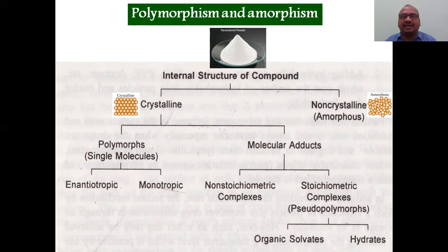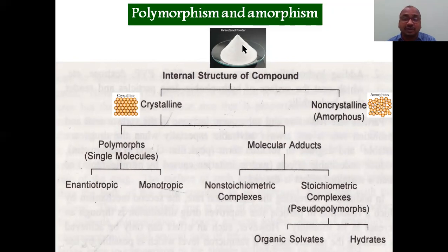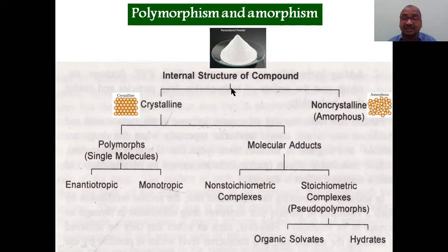First, see the internal structure of the compound, not the external structure. This is paracetamol powder — when looking from outside it looks like a powder. But only under the microscope, if you see carefully, either it may be a crystal or a non-crystal. That is the classification: internal structure of the compound, not the external structure.